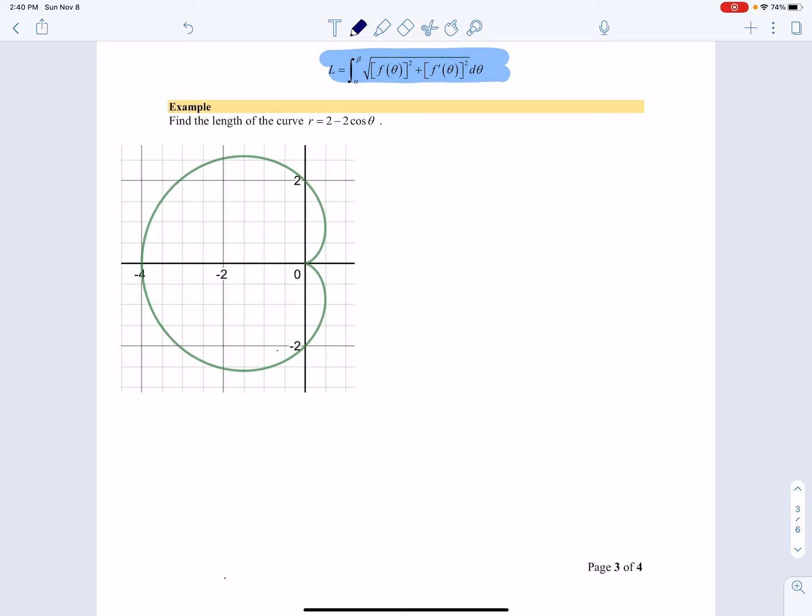All right, so we're going to find the length of a polar curve. As we see here, r equals 2 minus 2 cosine theta.